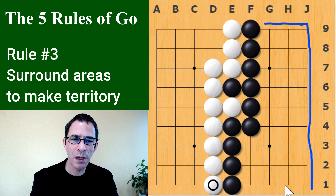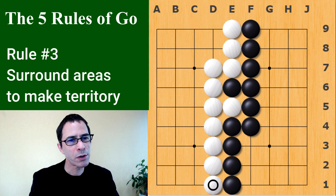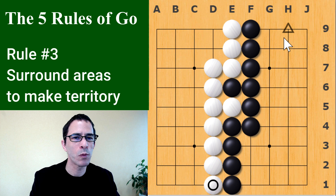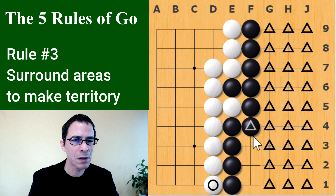The edges of the board help players surround territory because they form natural barriers — your opponent is not going to be coming from the outside of the board. This is a position where the players could declare the game finished. The player with more territory wins. You count the intersections: that's 3 times 9, so 27 points, plus a few more — 30 points for black.